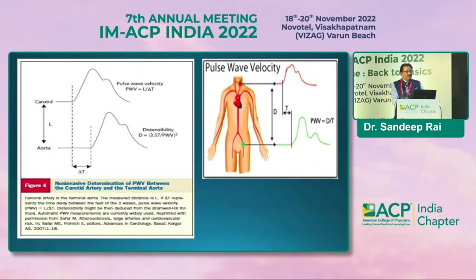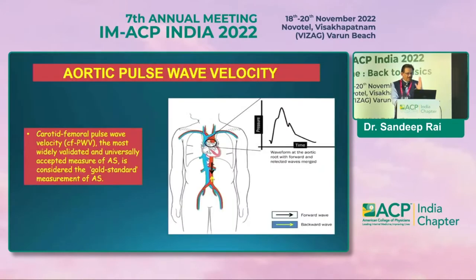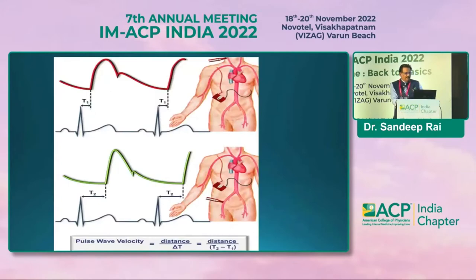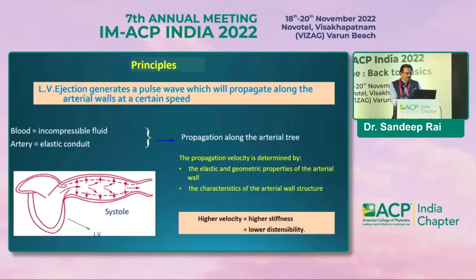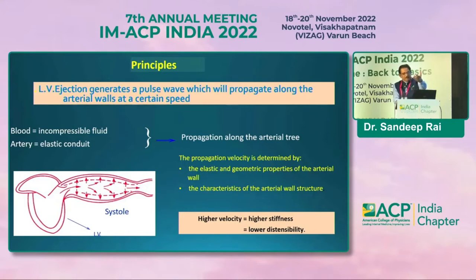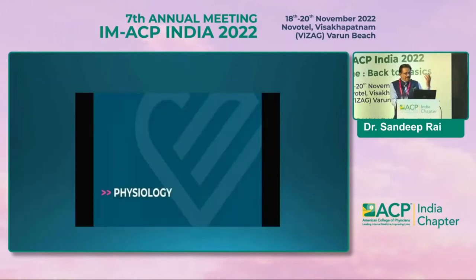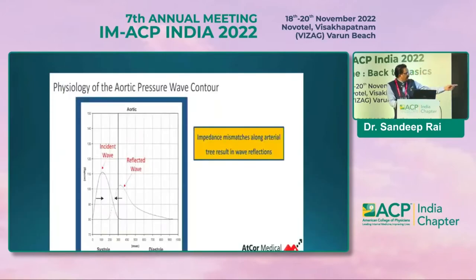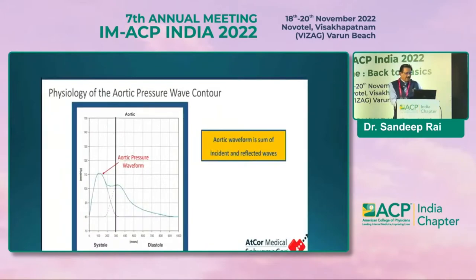Pulse wave velocity is done simply: you see the aortic pulse and the femoral pulse and measure how long it takes to travel between them, done on a background of ECG. The ECG tells you where contraction has started. The basic principle is: the ventricle ejects blood into the aorta, creating a pulse wave that traverses to the periphery. Importantly, there is also a reflective wave — in a healthy person, there is an incident wave and then a reflected wave.